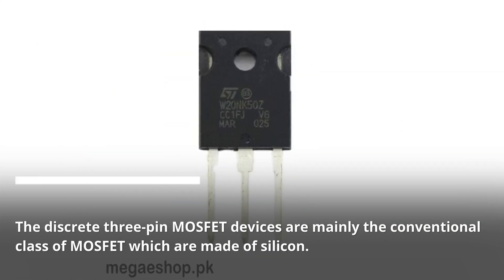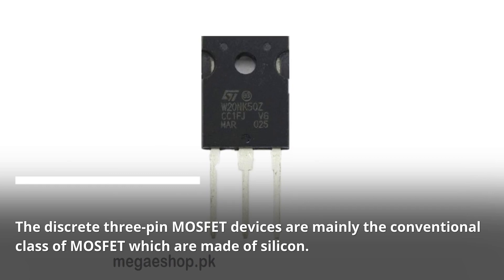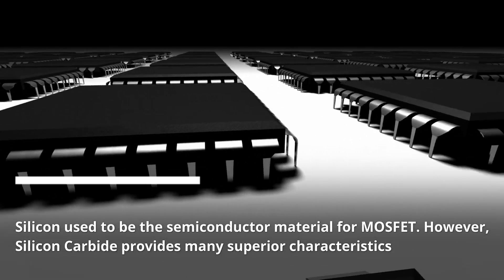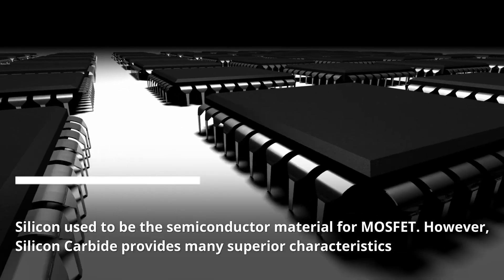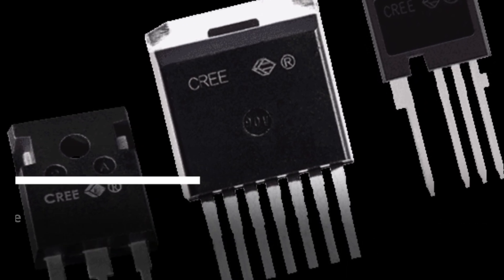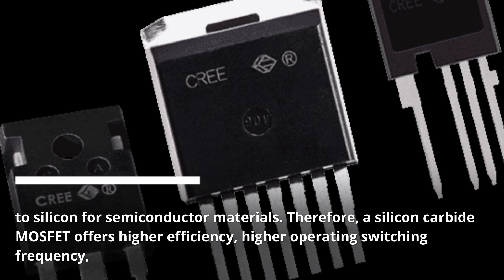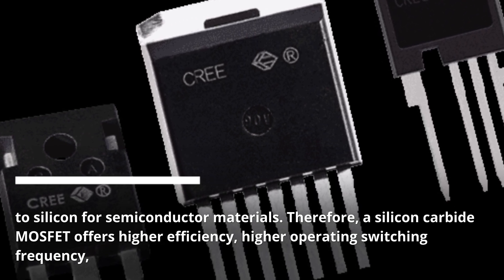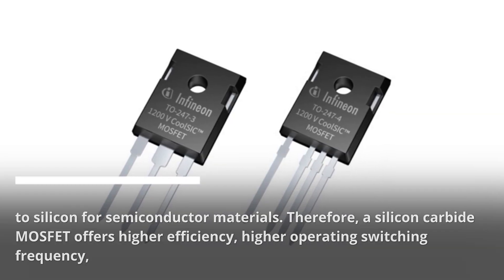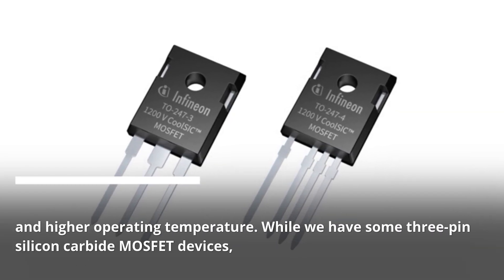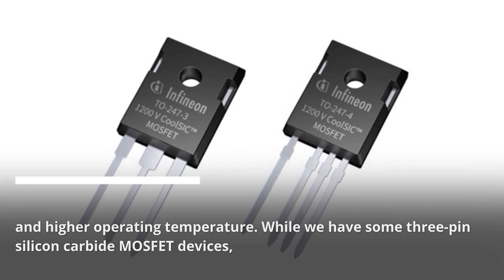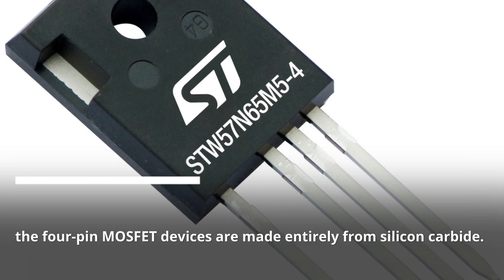The discrete three-pin MOSFET devices are mainly the conventional class of MOSFET made of silicon. Silicon used to be the primary semiconductor material for MOSFETs. However, silicon carbide provides many superior characteristics to silicon for semiconductor materials. Therefore, a silicon carbide MOSFET offers higher efficiency, higher operating switching frequency, and higher operating temperature. While some three-pin silicon carbide MOSFET devices exist, the four-pin MOSFET devices are made entirely from silicon carbide.